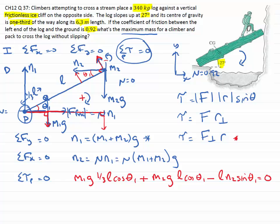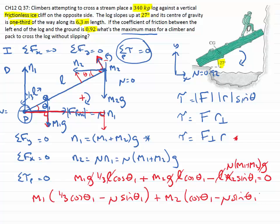We can simplify this by recognizing that L appears in each term, so it drops out. If we rewrite N2 as mu times (M1 + M2) times g, then g also drops out. Now let's write this equation with M1 factored outside. M1 times one-third cosine theta 1 minus mu M1 sine theta 1, plus M2 times cosine theta 1 minus mu M2 sine theta 1 equals zero.